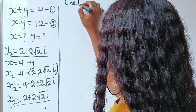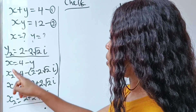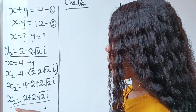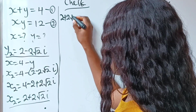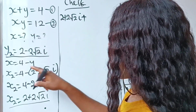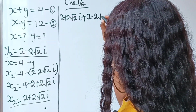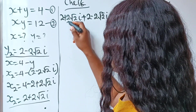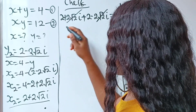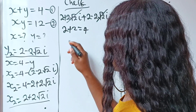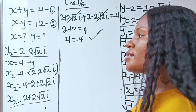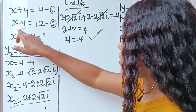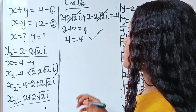Now let's check using x₂ and y₂. Plugging into equation 1: x₂ plus y₂ equals (2 plus 2√2i) plus (2 minus 2√2i). The imaginary parts cancel — 2√2i minus 2√2i equals 0 — leaving 2 plus 2 equals 4, and 4 equals 4. That's correct. If you also substitute these values into equation 2 you will still get 12, confirming our solution is right.